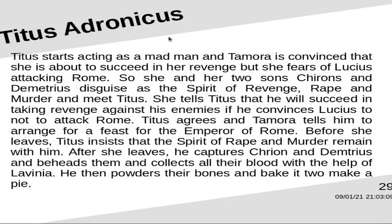Titus starts acting as a madman and Tamora is convinced that she is about to succeed in her revenge. But she fears Lucius attacking Rome, so she and her two sons Chiron and Demetrius disguise as the spirit of revenge, rape and murder and meet Titus. She tells Titus that he will succeed in taking revenge against his enemies if he convinces Lucius not to attack Rome. Titus agrees, and Tamora tells him to arrange a feast for the emperor. Before she leaves, Titus insists that the spirits of rape and murder remain with him. After she leaves, he captures Chiron and Demetrius, beheads them, and collects all their blood with Lavinia's help.